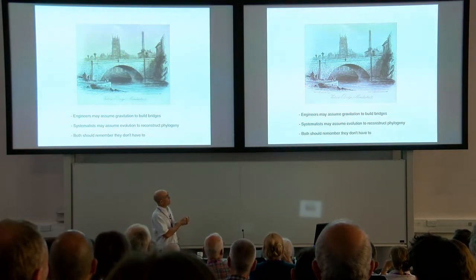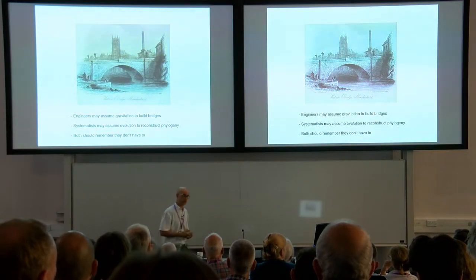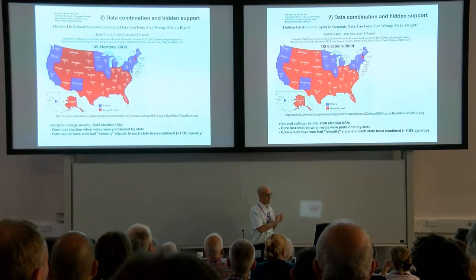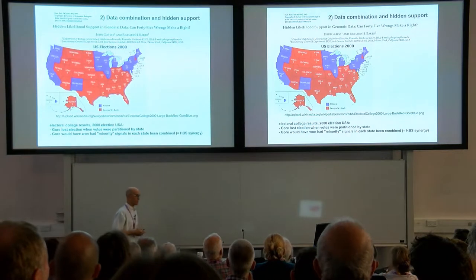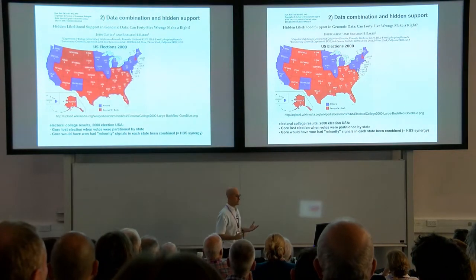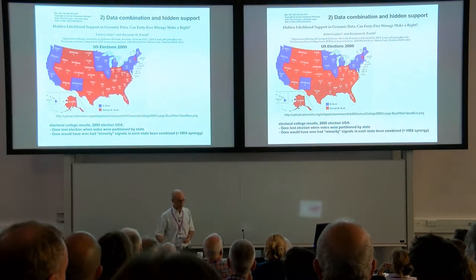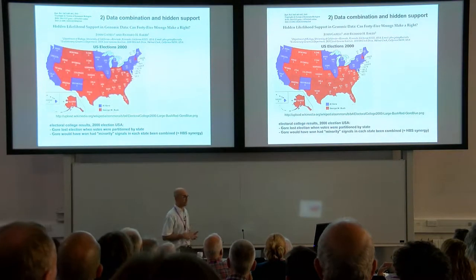We should remember that we don't have to assume evolution when we reconstruct phylogeny. That segues into the second part of my talk: data combination and hidden support. Given the fact that we don't have to retest evolution every time, in my opinion, the optimal strategy — with a few qualifications — is generally to combine data, or usually to combine data.